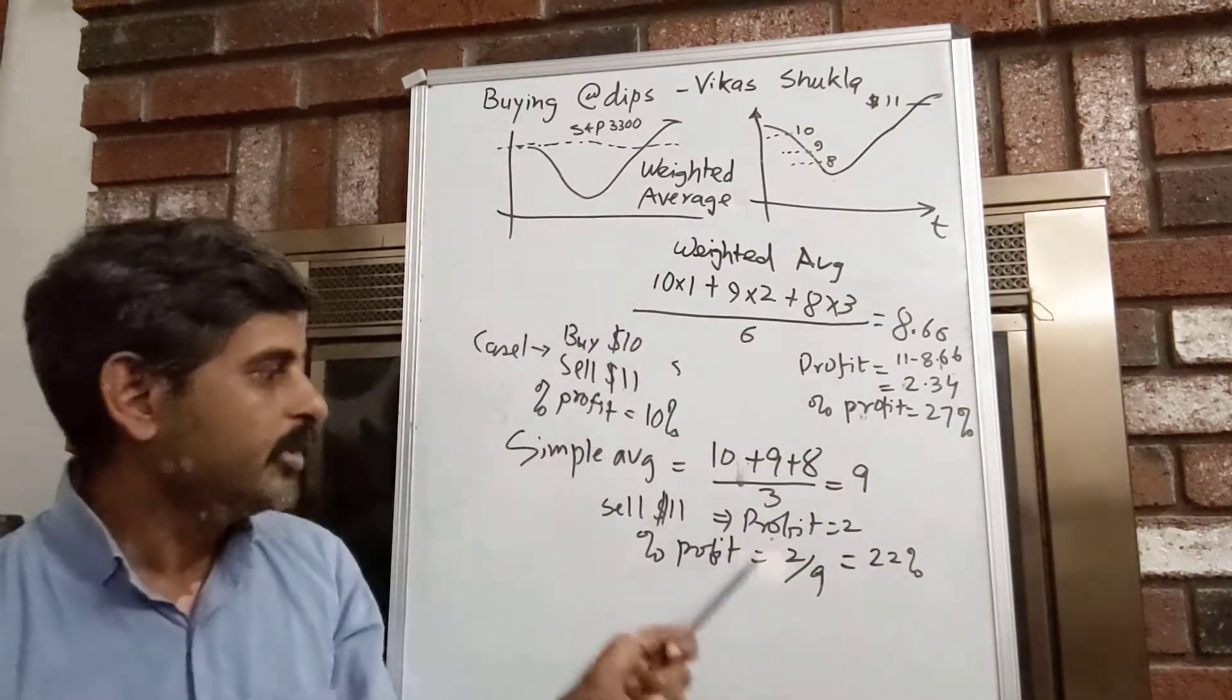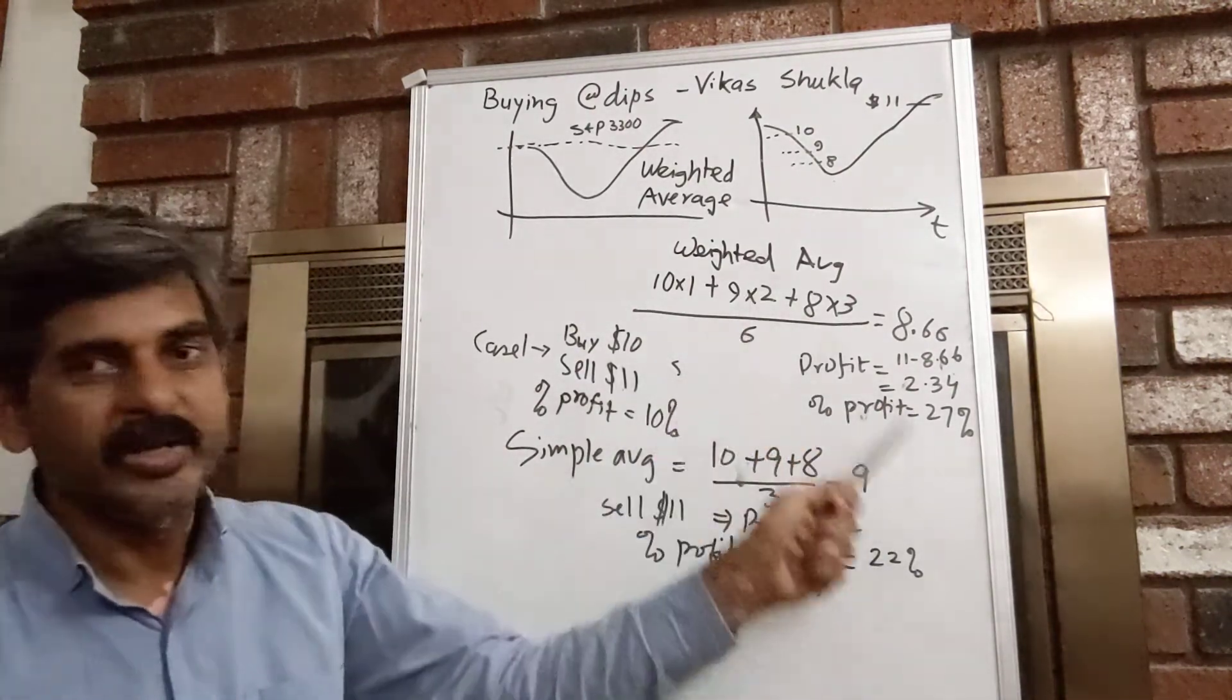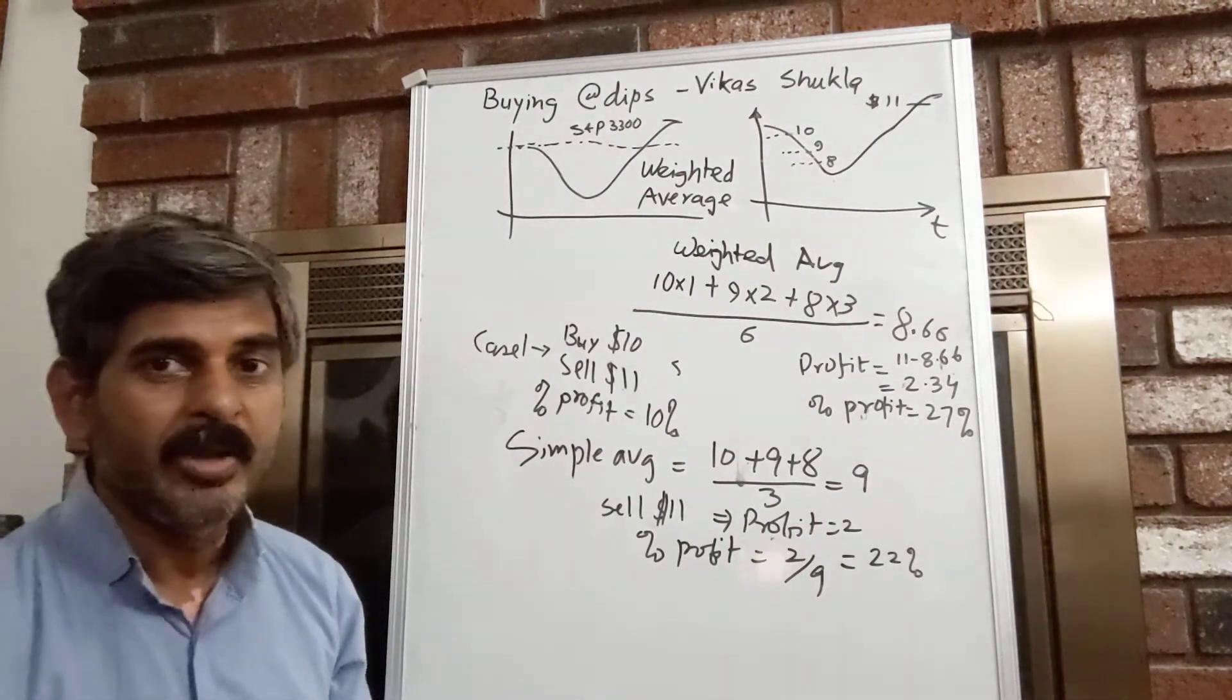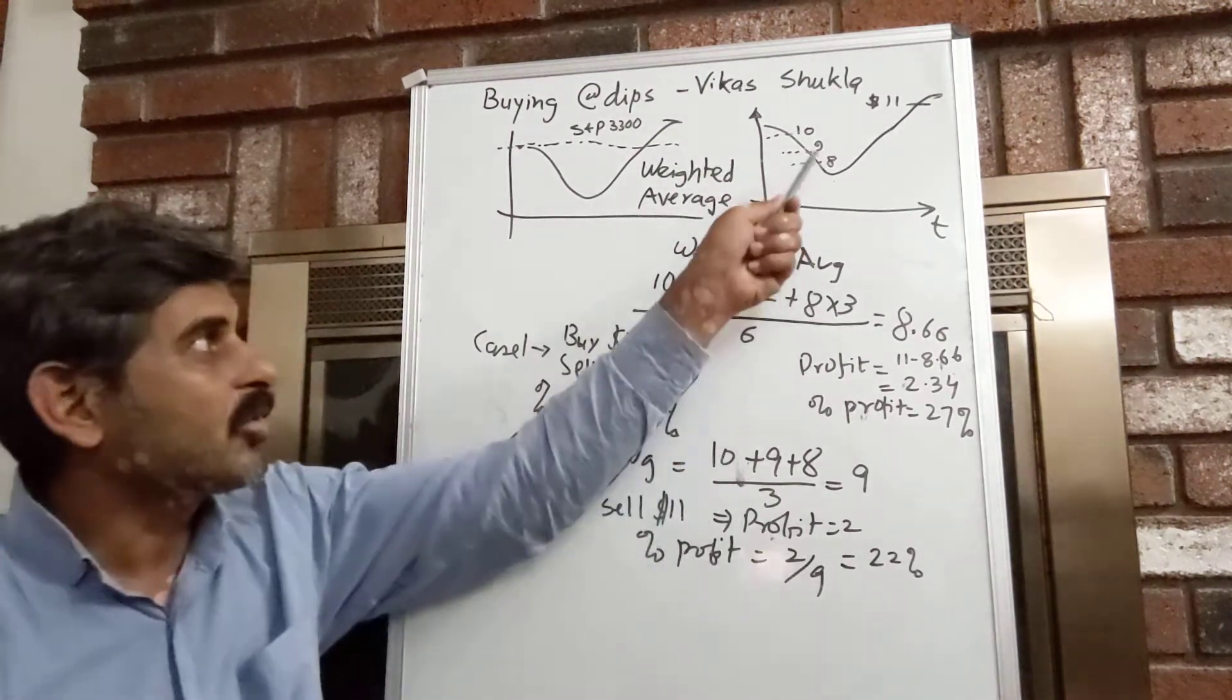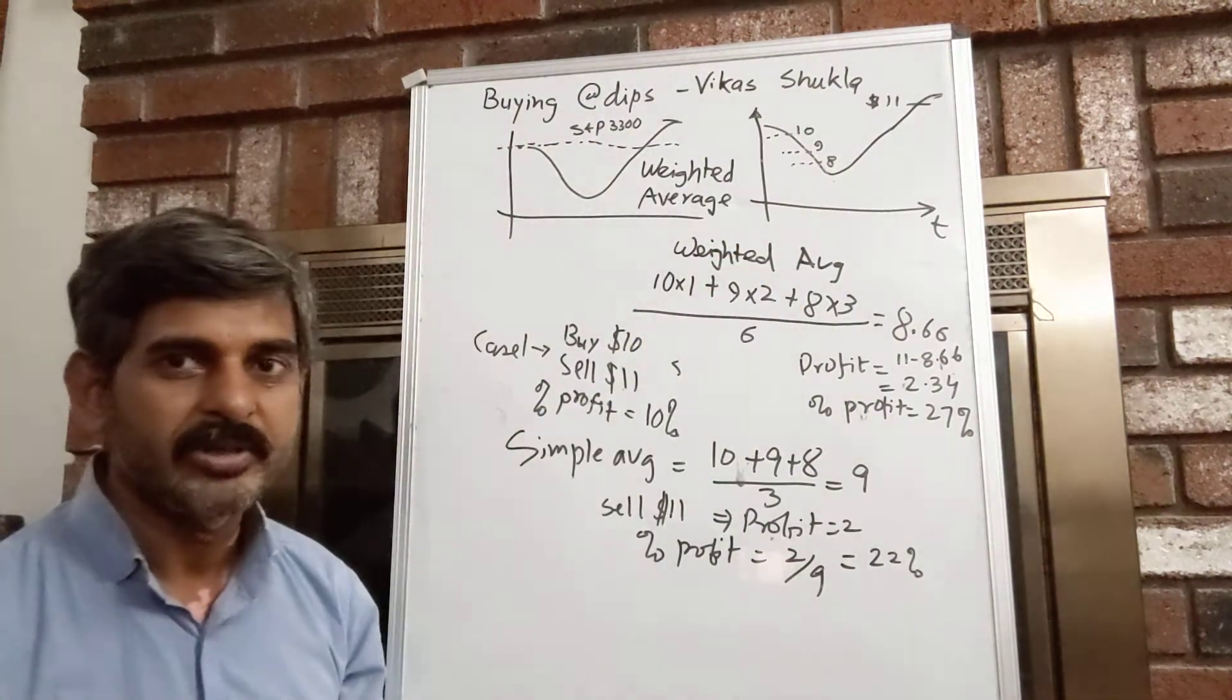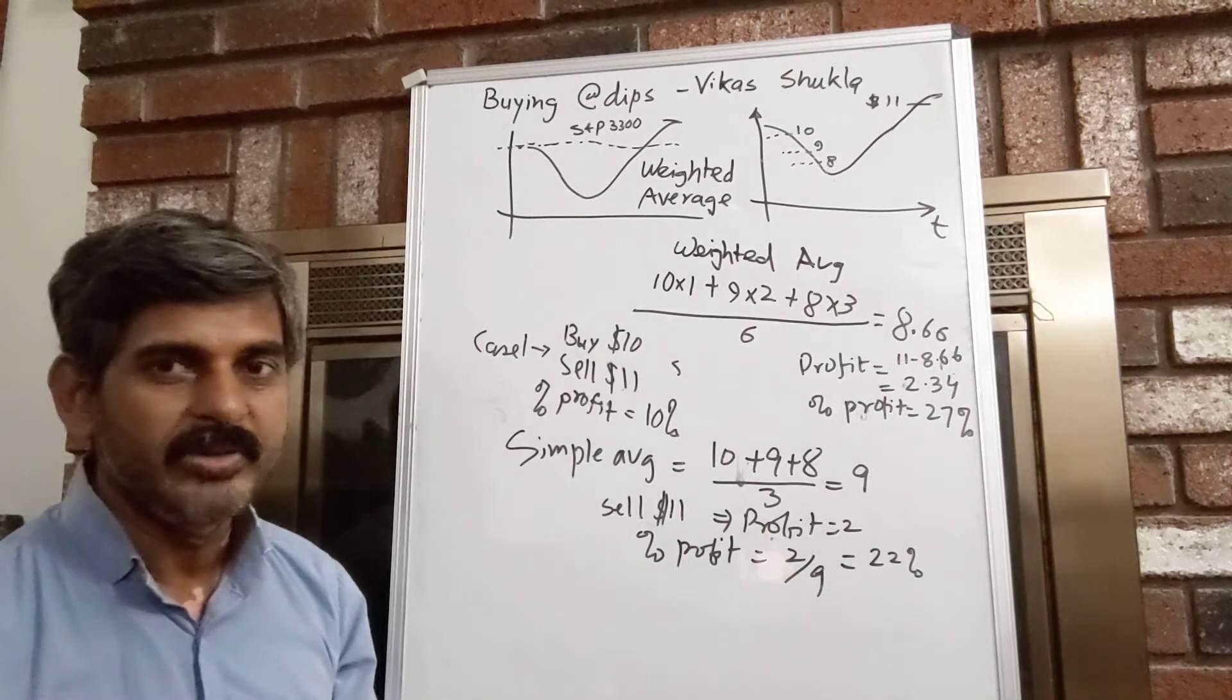At the minimum, try to do a simple averaging and if you could do weighted averaging, that's even better. So, this is the math behind buying at the dip, but be cautious about it. The stock could be headed all the way down and it could go bankrupt.